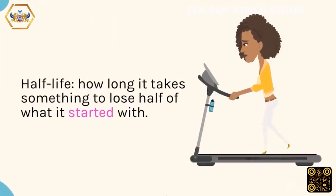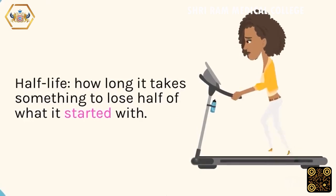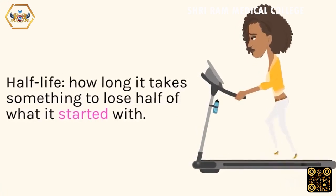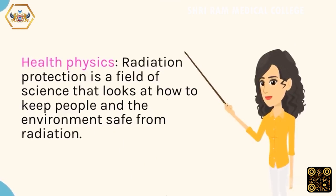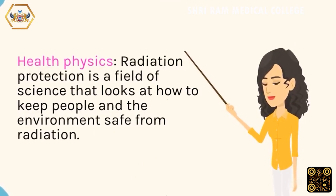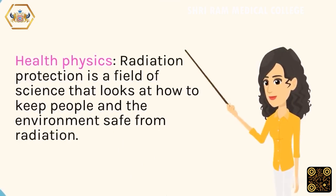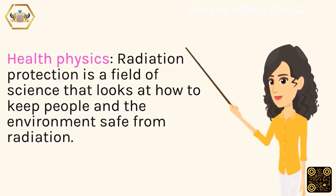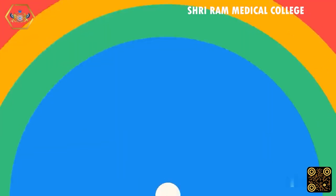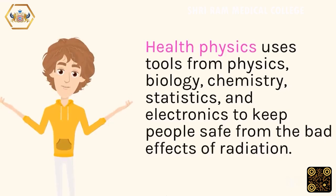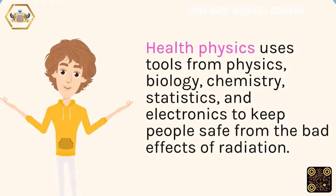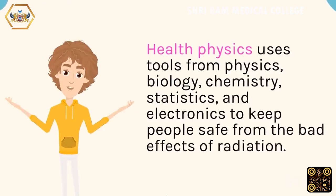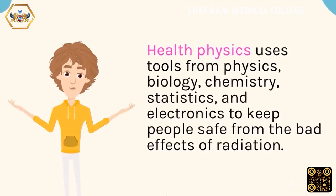Half life: how long it takes something to lose half of what it started with. Health physics: radiation protection is a field of science that looks at how to keep people and the environment safe from radiation. Health physics uses tools from physics, biology, chemistry, statistics, and electronics to keep people safe from the bad effects of radiation.